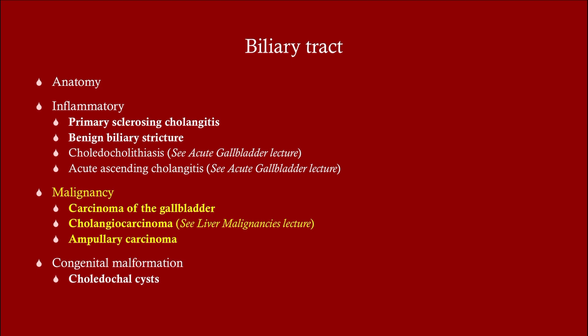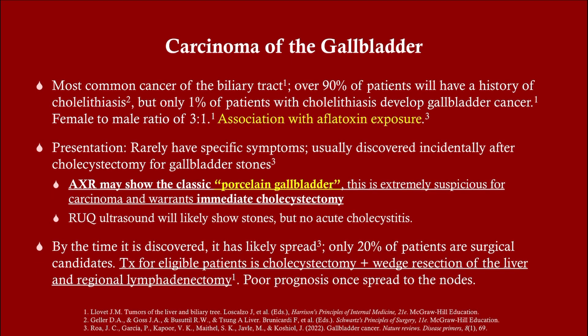Carcinoma of the gallbladder is the most common cancer of the biliary tract. Ninety percent of these patients have a history of cholelithiasis — that will come up on a test question. There's also an association with aflatoxin, which comes from moldy produce. The USMLE loves to test associations between cancers and carcinogens, so it's very important to know that association.